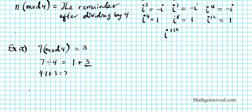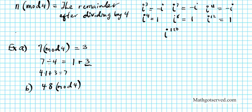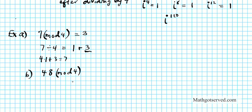Alright, let's try another example. Example B: What is 48 modulo 4? For 48 modulo 4, the question is: what is the remainder after you divide 48 by 4? 48 divided by 4 is 12, because 4 times 12 is 48, remainder 0. Since the remainder is 0, 48 modulo 4 equals 0.